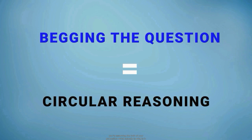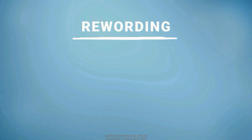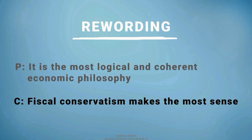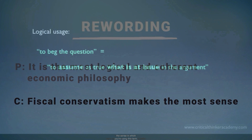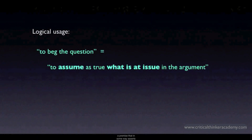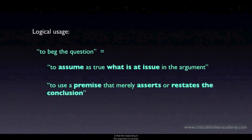You're assuming the truth of your proposition, which is actually what is in need of proof. People will often beg the question by being sneaky and rewording the conclusion to make it seem different from the assumption made in the premise. For example: 'Fiscal conservatism makes the most sense because it's the most logical and coherent economic philosophy.' Making sense is the same thing as being logical and coherent — the person is just rewording the conclusion, not presenting any evidence. In logic, an argument begs the question when it assumes as true precisely what is at issue.